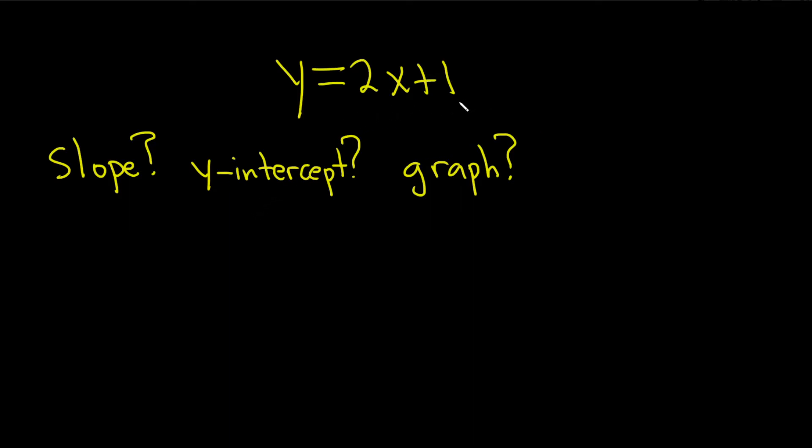So here we have y equals 2x plus 1, and they tell us that this is a linear function. This is just a straight line, and there's three questions. We want the slope, the y-intercept, and the graph.